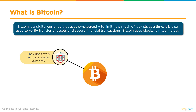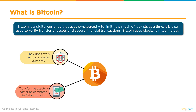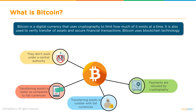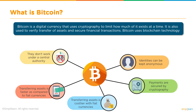What are the features of Bitcoin? They don't work under a central authority. Transferring assets is faster and costs less compared to fiat currency. The cryptocurrency market removes the need for intermediaries — the more the intermediaries, the higher the transaction cost. Therefore, whenever we do a transaction with virtual currencies like Bitcoin or other cryptocurrencies, the transaction cost is bound to be lower. Payments are secured by cryptography using your private key and public key. The identities of parties doing transactions using Bitcoin are kept anonymous, and it uses blockchain as its underlying technology.